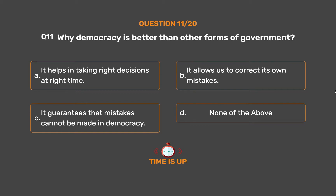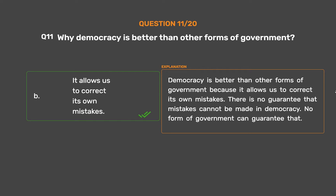The correct answer is Option B: It allows us to correct its own mistakes. Democracy is better than other forms of government because it allows us to correct its own mistakes. There is no guarantee that mistakes cannot be made in democracy — no form of government can guarantee that.